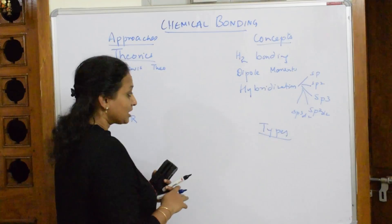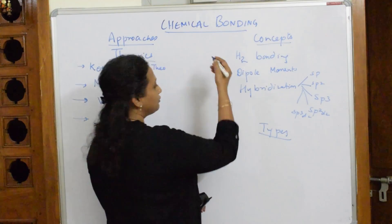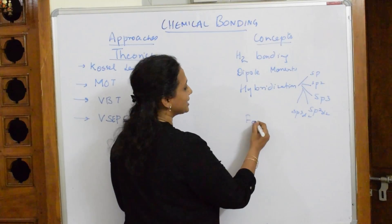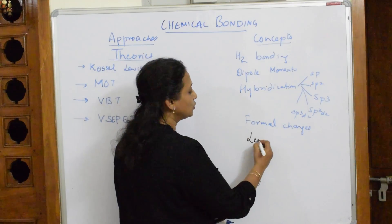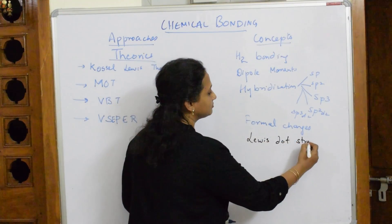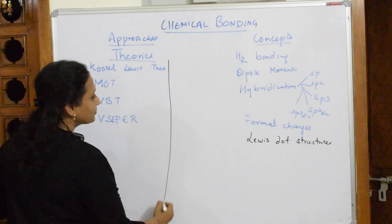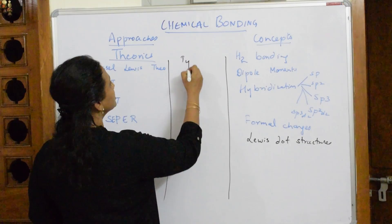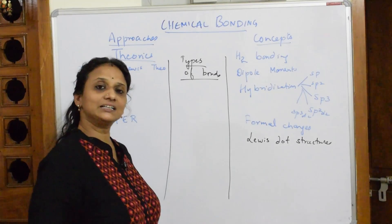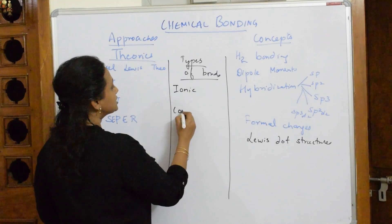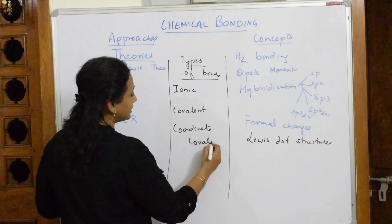Apart from hybridization, you also have in your syllabus small concepts like formal charges and Lewis dot structures. These are the basic concepts I'll be covering. Apart from these concepts, NCERT also gives you information on types of bonds — ionic bond, covalent bond, and coordinate covalent bond, which is also called a dative bond.